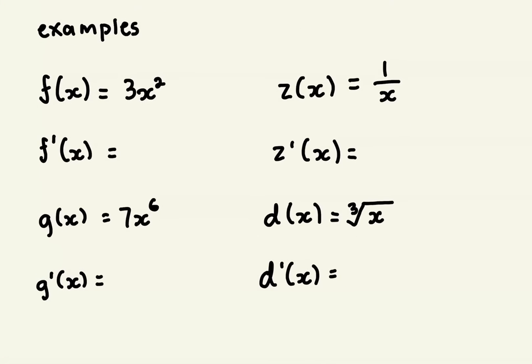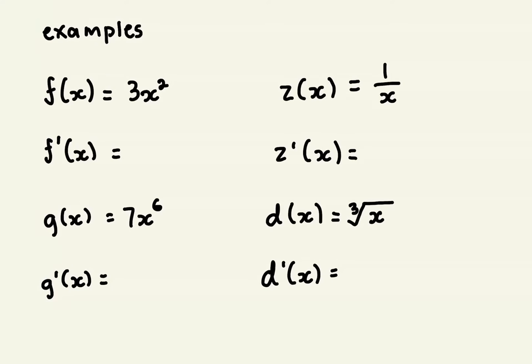Here's a few examples that we can try together. So this first one: 7x to the power of 6. Same thing: you bring the exponent down, multiply it, subtract 1 from the original number, which was 6, so you're left with 5. That's going to be 42x to the 5th power.